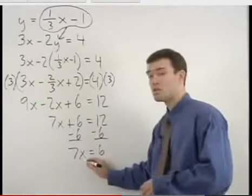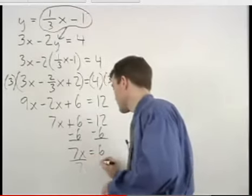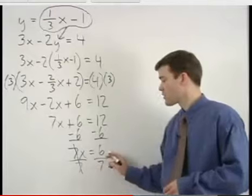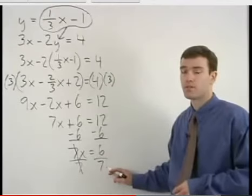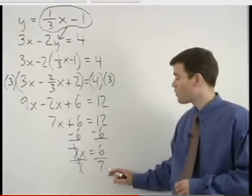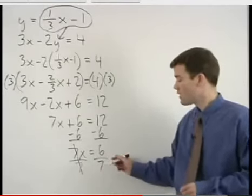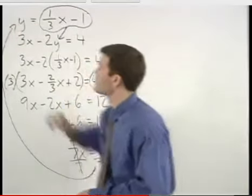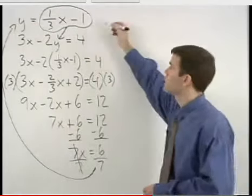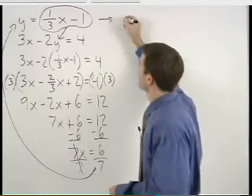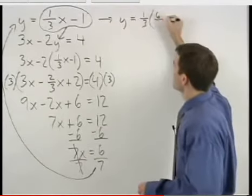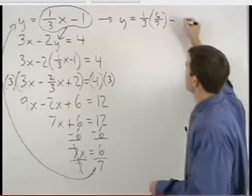To solve for x, we divide both sides by 7, and notice that x equals the fraction 6/7. To find y, we plug 6/7 back in for x in our first equation to get y equals 1/3 times (6/7) minus 1.